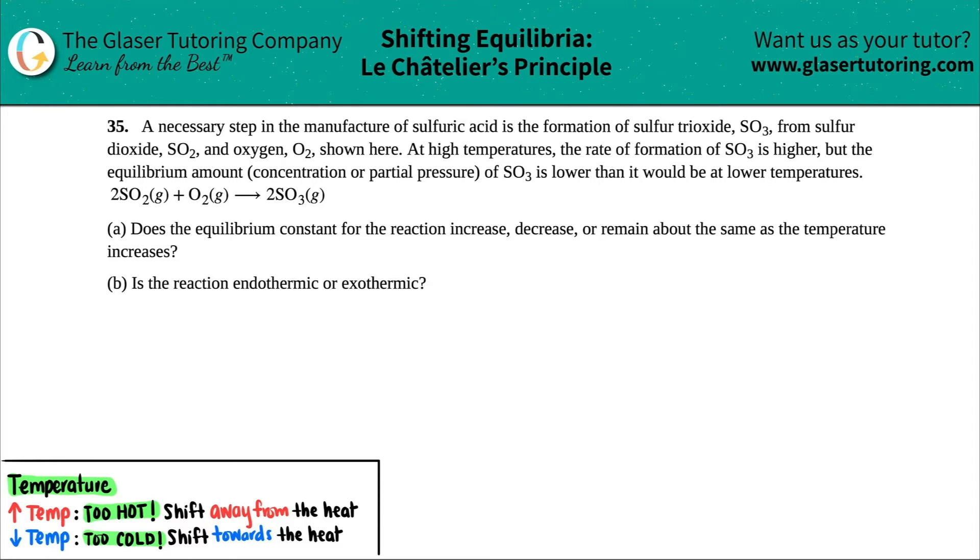Number 35. A necessary step in the manufacture of sulfuric acid is the formation of sulfur trioxide, SO3, from sulfur dioxide, SO2, and oxygen, O2, as shown here in this balanced equation.